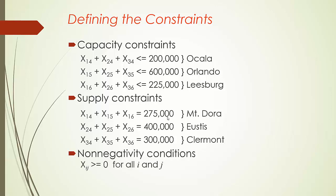Of course, we're going to have the non-negativity constraints as well — all nine decision variables are going to be non-negative. In the next video, I'm going to show you how to solve this linear programming model for the transportation problem in Excel using Solver.